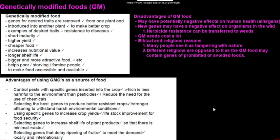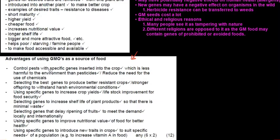Genetically modified food is part of food security. Genes for desired traits are removed from one plant and introduced into another to make a better crop. Examples of desired traits include resistance to disease, short maturity, higher yield, cheaper food, and increased nutritional value. Advantages of GMOs include controlling pests with specific genes inserted into the crop, which is less harmful to the environment because fewer pesticides are needed.